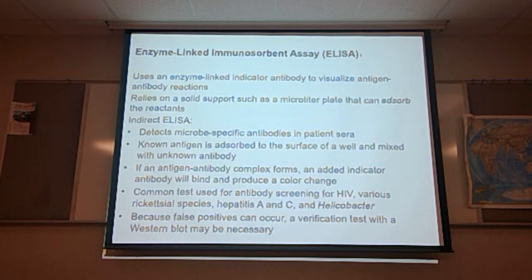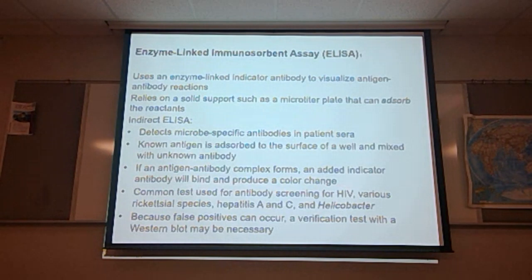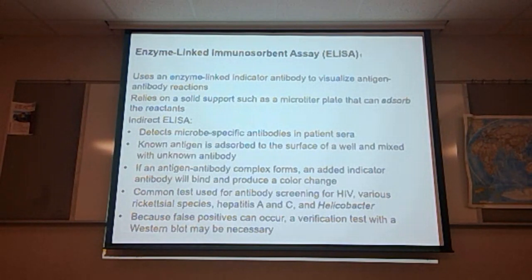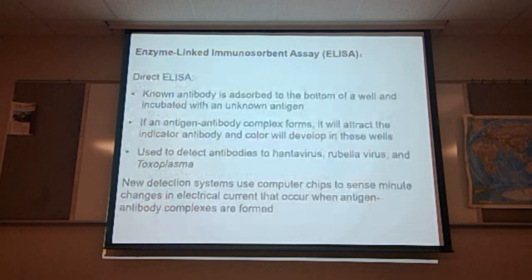For HIV, for instance, we will run the ELISA test. If it comes back positive, we run the ELISA a second time to verify that positive. Once we have two positives in a row, we then send it on for Western blot testing for verification of the result.